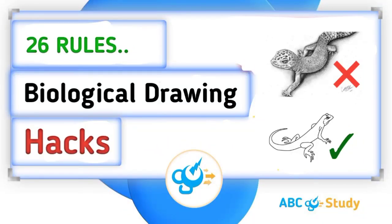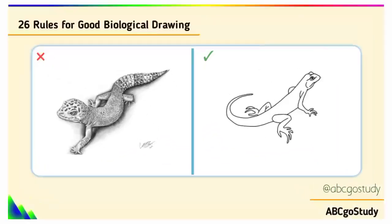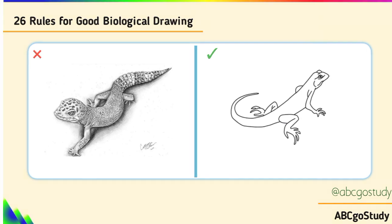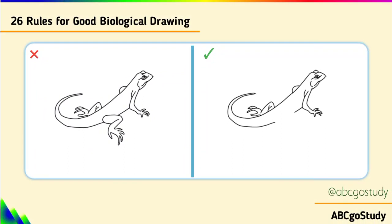Basic rules for biological drawing for WAEC, NECO, GCE and other examinations. An artist could be totally scored 15 or even 0% in a biological drawing, while you with no artistic idea could be given 80, 90, or 100% in a biological drawing. A part could be intentionally removed, so draw exactly what you see.